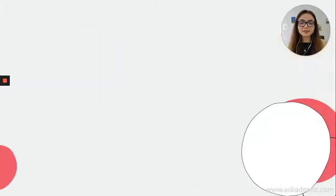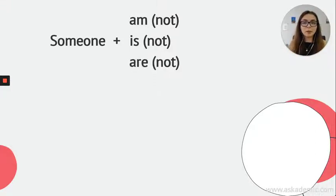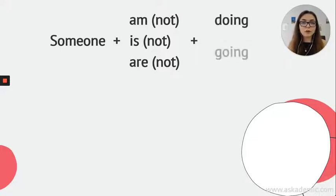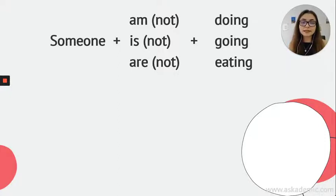Let's look at the present continuous tense. Again, we have a subject — I, you, we, they, he, she, it — and then we have am, is, or are, depending on the subject. If it's 'I,' we say 'I am.' If it's 'you,' you are; he, she, or it is. Then we put the ING form of a verb — doing, going, eating, playing, having. It's always the ING form. It doesn't matter which continuous tense you use — present perfect continuous, future continuous, present continuous — you always use the ING form. Don't forget this.